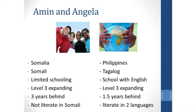Amin arrived to a Canadian school three years ago from Somalia. He was in a refugee camp there and his literacy skills involved reading and talking about the Koran. He's at about a level three expanding in English proficiency. He's not able to write or read his first language and he's reading at about an end of grade two level in the grade five class. He's friendly, outgoing and motivated but he knows that he's not doing as well as his peers in school, and he loves soccer.